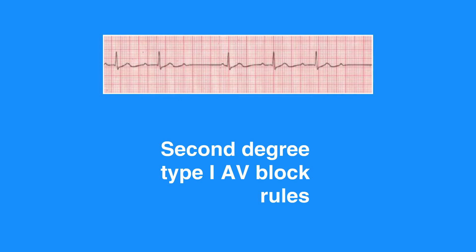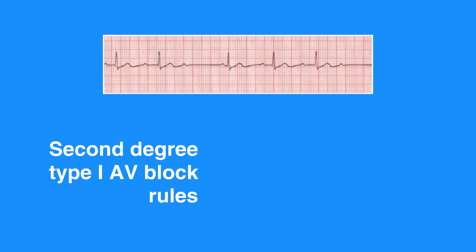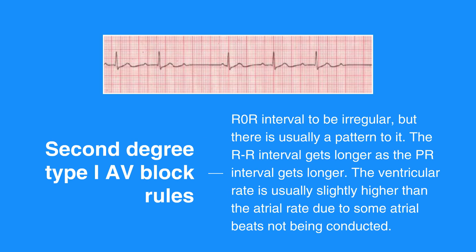Second degree type 1 AV block or Wenckebach rules include RR interval to be regular, but there is usually a pattern to it. The RR interval gets longer as the PR interval gets longer. The ventricular rate is usually slightly higher than the atrial rate due to some atrial beats not being conducted. The atrial rate is usually normal. P waves are upright and uniform. Most complexes will have a P wave in front of them; however, there will be some that don't. The PR interval gets progressively longer until there is a dropped QRS complex. The QRS complex measures less than 0.12 seconds.